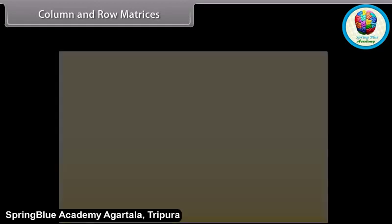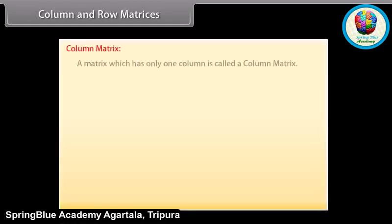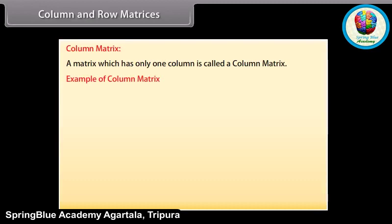Column and row matrices. Column matrix: a matrix which has only one column is called a column matrix. For example, A equals 21, 17, 9 arranged column-wise. This matrix has three rows but only one column, so it is a column matrix. Its order is 3 by 1.